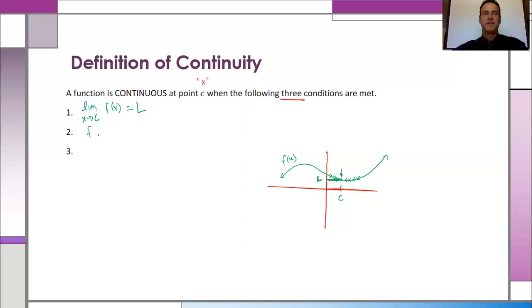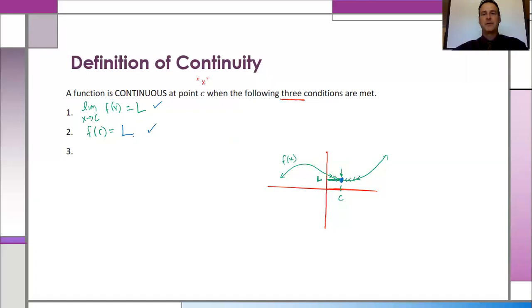Second condition is that f of C must exist. If you look here, there's no open circle — there is a point there, so yes, f of C exists. The third condition is that whatever value the limit gives you and whatever value f of C gives you, those two things must be equal to each other. So the limit as X approaches C of f of X must equal f of C. That's what continuity is — making sure the limit exists and there is a point there, not a hole.